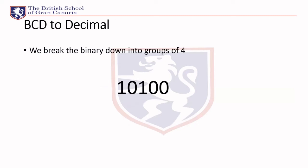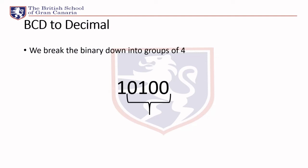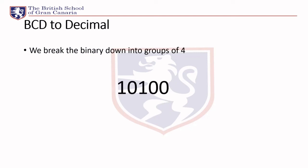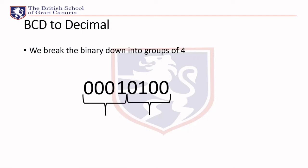Breaking them down into groups of four — here's the number. Working from right to left, break it into groups, and for any number left over you just add leading zeros. That's all we do — just add zeros. So to put this into decimal it's four and one.